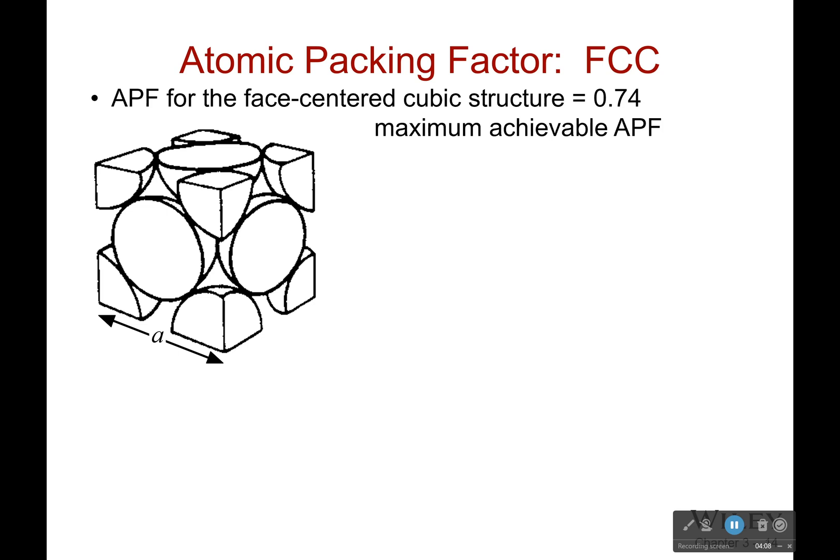Now what is the atomic packing factor for this face-centered cubic structure? Well, I can go ahead and show you that it's 0.74. But how do we get that? Well, geometry. Figured out through geometry. You know there's four atoms. We also know that this side length is always determined to be a. So we need to get our radius in terms of a.